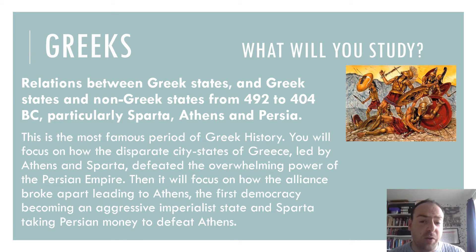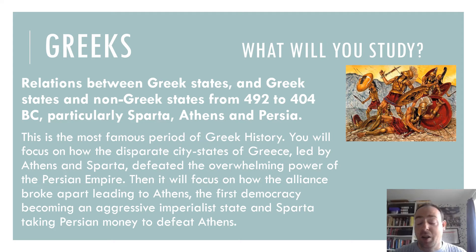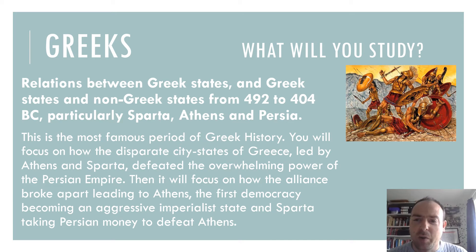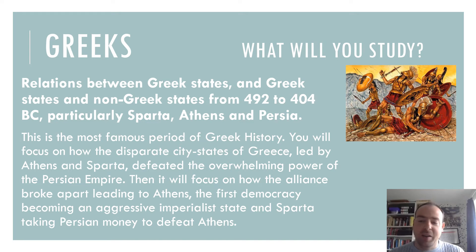This is one of the most famous periods of Greek history. You will see how the disparate city states of Greece, led by Athens and Sparta, defeated the overwhelming power of the Persian Empire, and how that alliance broke apart — leading to Athens, the first democracy, becoming an aggressive imperialistic state, and Sparta taking Persian money to defeat Athens. The culture and differences between Sparta and Athens are absolutely fascinating — this world of military domination compared to the philosophy and democracy of Athens — and this is where we see the emergence of European power in the face of aggression from the mighty Persian Empire.